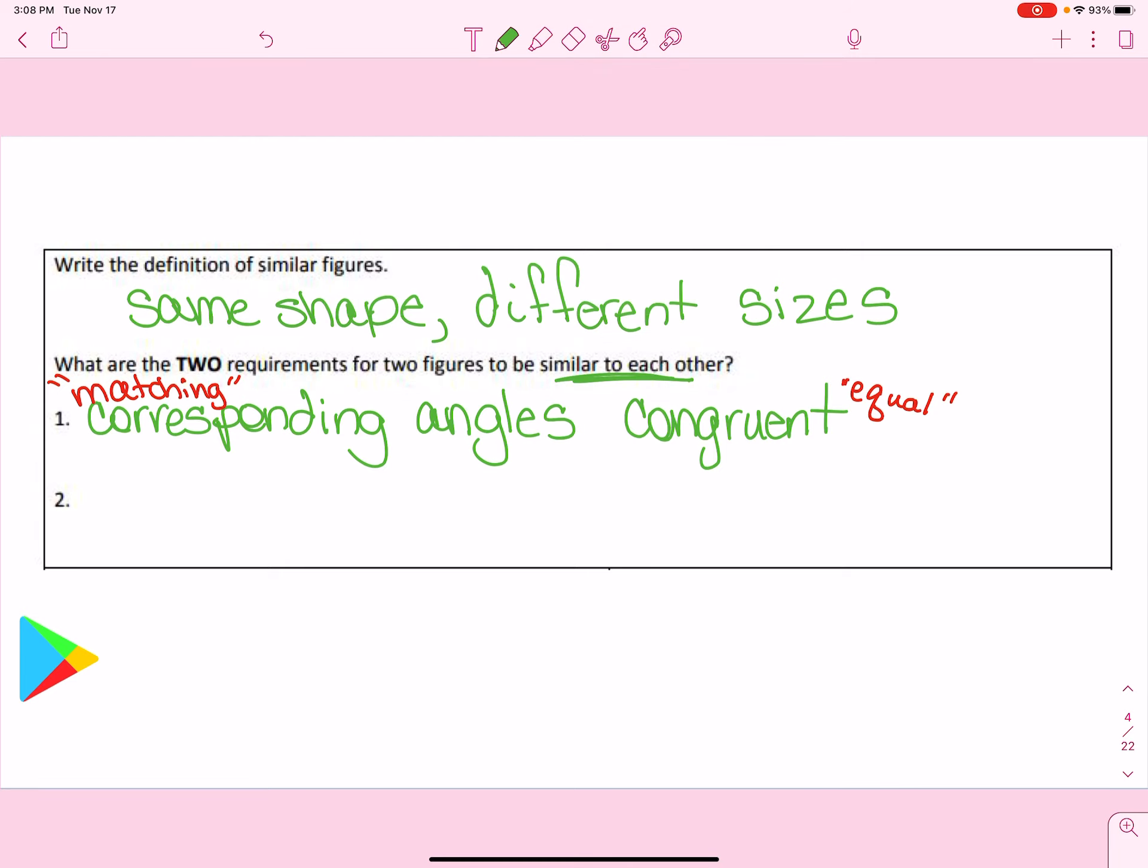And the other thing that has to be true is that corresponding sides aren't going to be equal or congruent. Instead, they're going to be proportional.